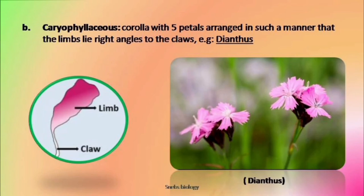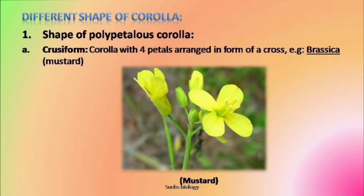The second type of corolla is caryophyllaceous corolla. In this, the petal shape is like that of cruciform corolla with a difference — one part is narrow, one part is wide, and it is at right angle, but its margins are serrated and the number is five. So this type has five petals visible to us.